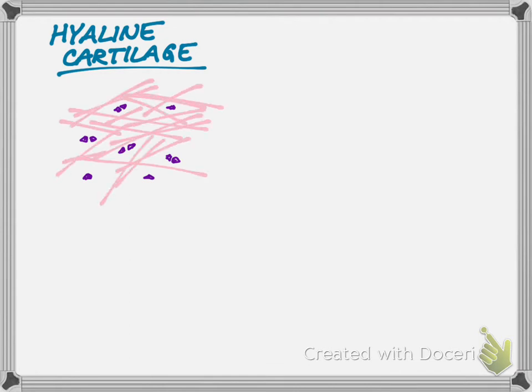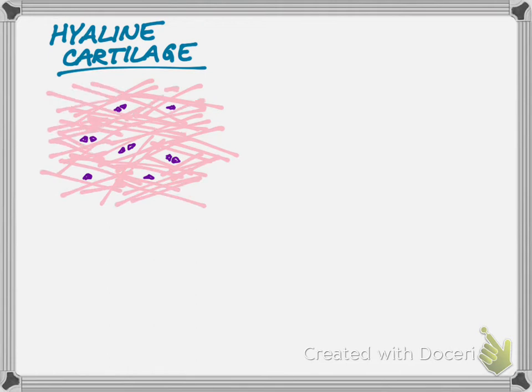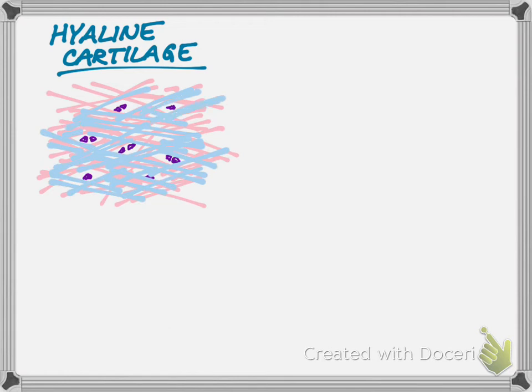But the basic idea is the same every single time. These cells are going to make a matrix of protein. That protein is almost always the same: it is collagen. But what makes one tissue different from the next is what else you might add to that collagen.